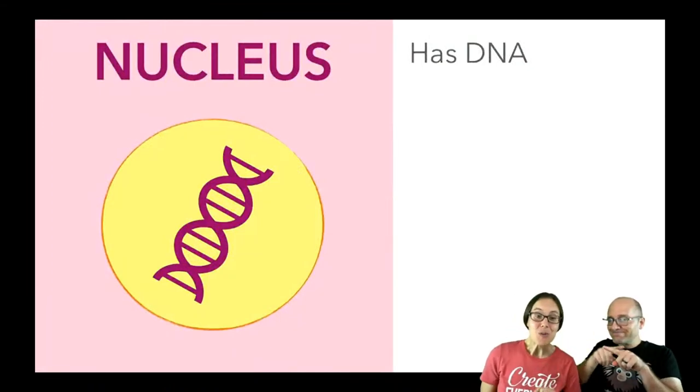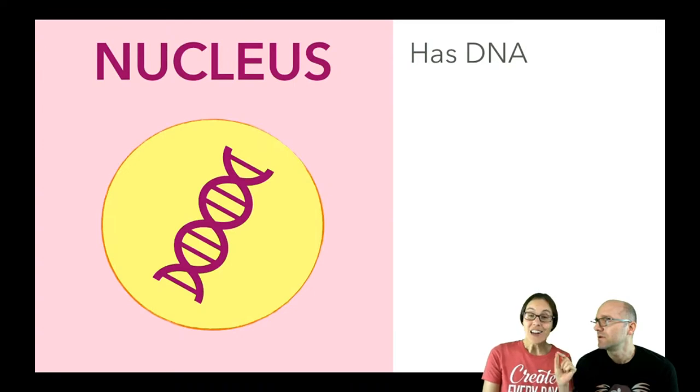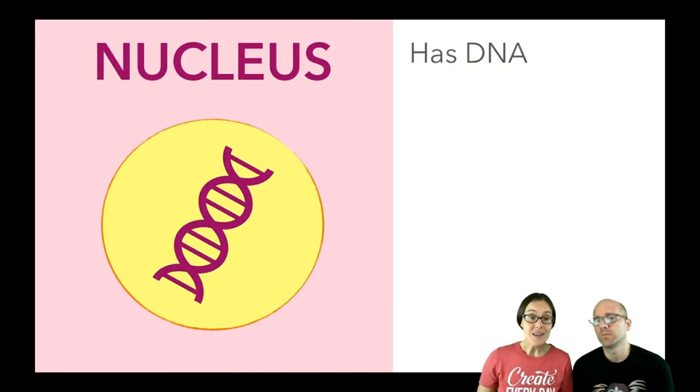And our last term that we're learning today about cells is nucleus. Some cells have a nucleus with DNA, and in other cells the DNA is just floating around inside the cell loose. And on Monday, we're going to learn a lot more about the difference between cells that have a nucleus and cells that don't.